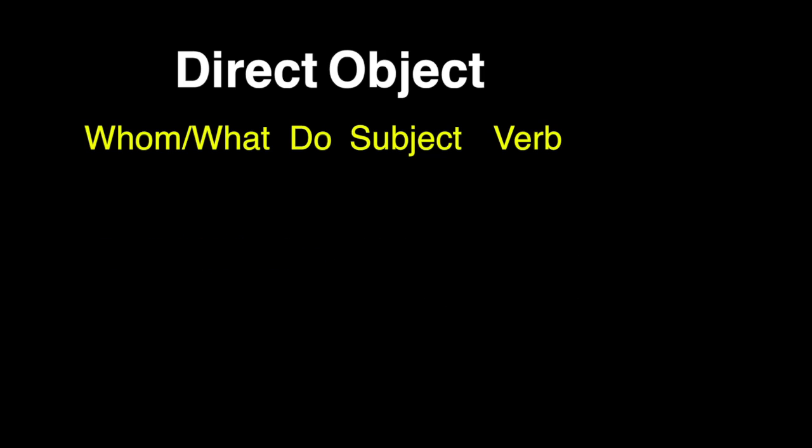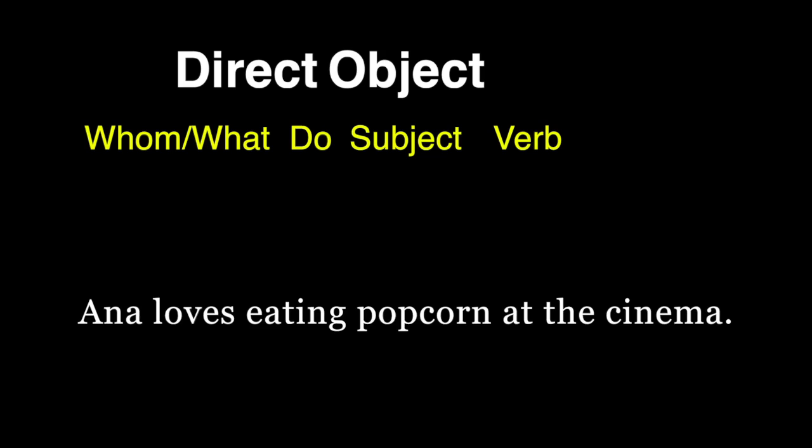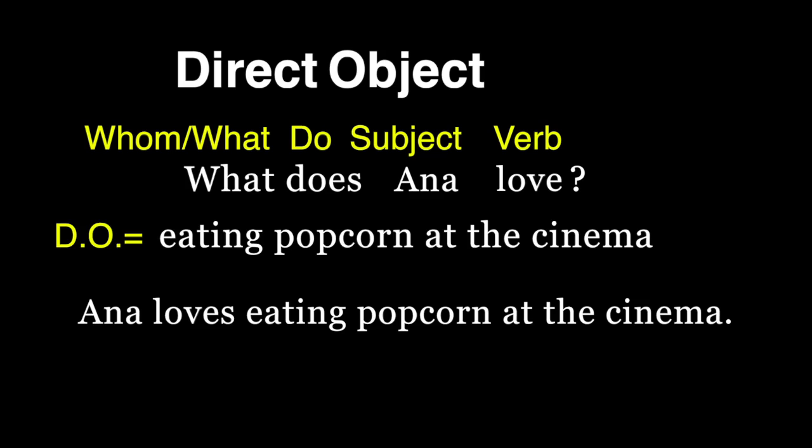Now, let's look at a more complicated example. Anna loves eating popcorn at the cinema. The main verb in this sentence is loves and the subject is Anna. What does Anna love? The direct object, eating popcorn at the cinema.